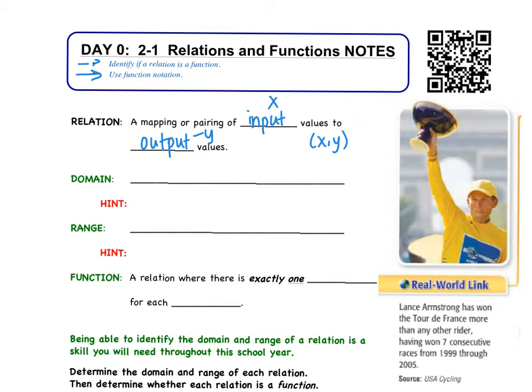So a relation, there's an input, there's an x, there's an output, there's a y. So along with a relation, we need to be able to figure out how to find the domain and range of a relation.